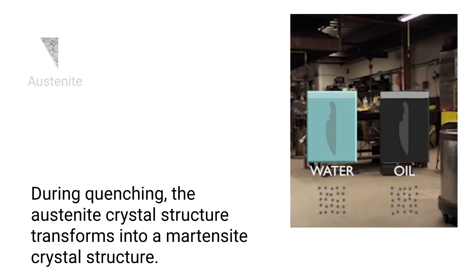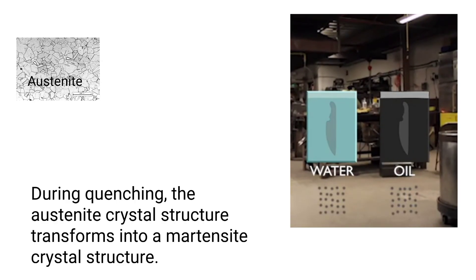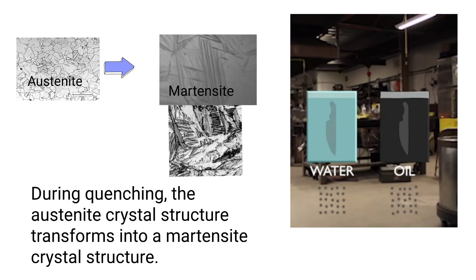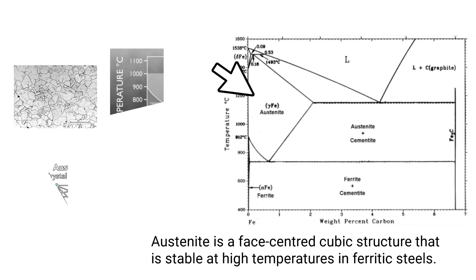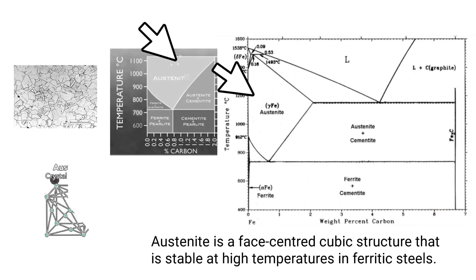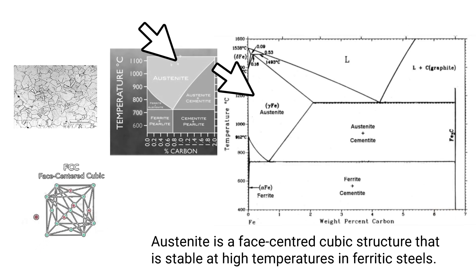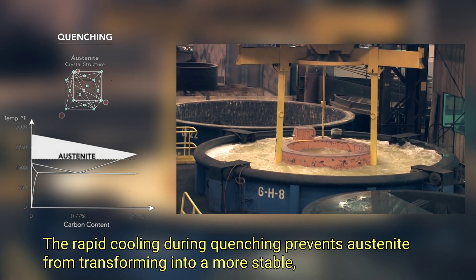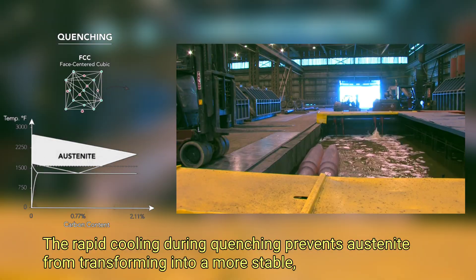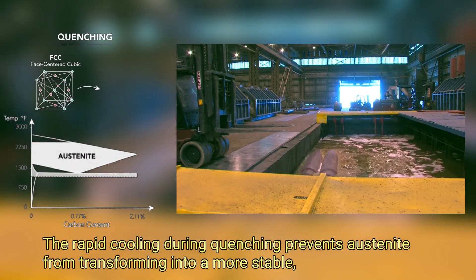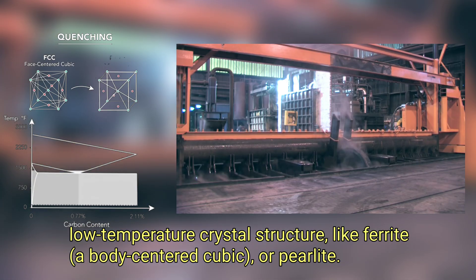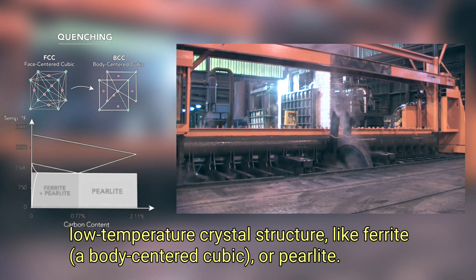During quenching, the austenite crystal structure transforms into a martensite crystal structure. Austenite is a face-centered cubic structure that is stable at high temperatures in ferritic steels. The rapid cooling during quenching prevents austenite from transforming into a more stable low-temperature crystal structure like ferrite.